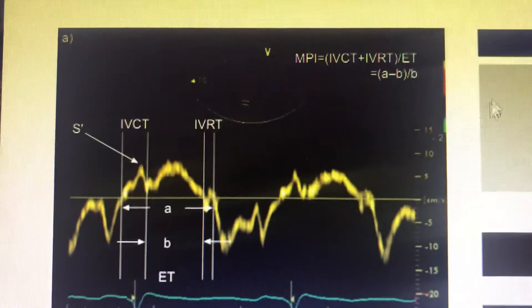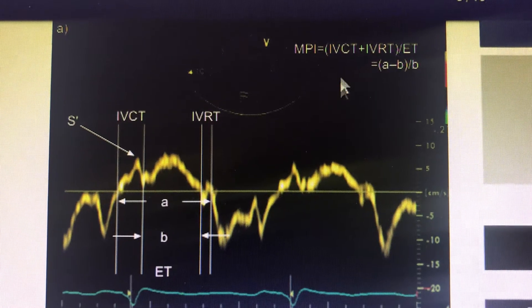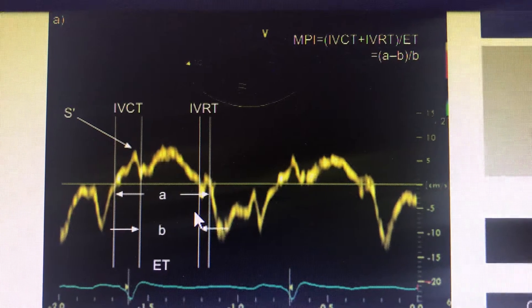The myocardial performance index is the isovolumetric contraction time plus isovolumetric relaxation time divided by the ejection time.